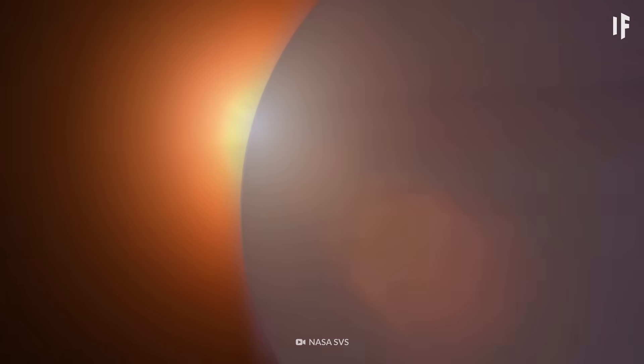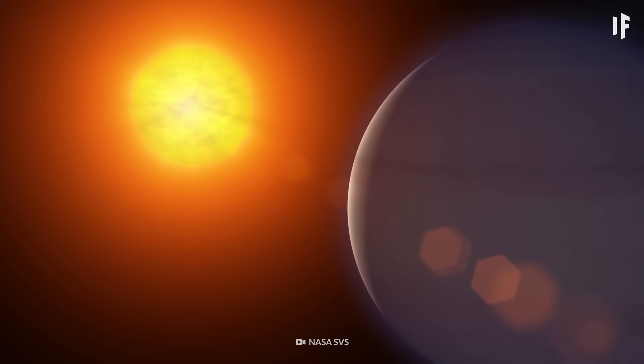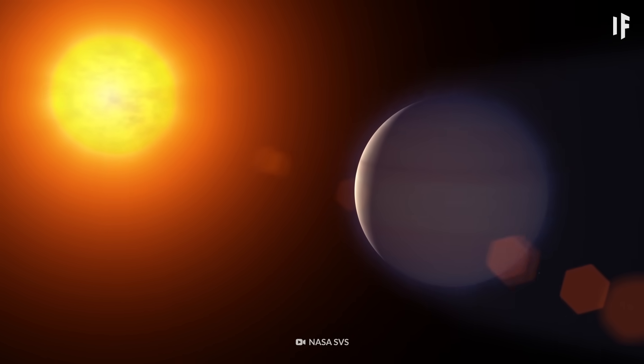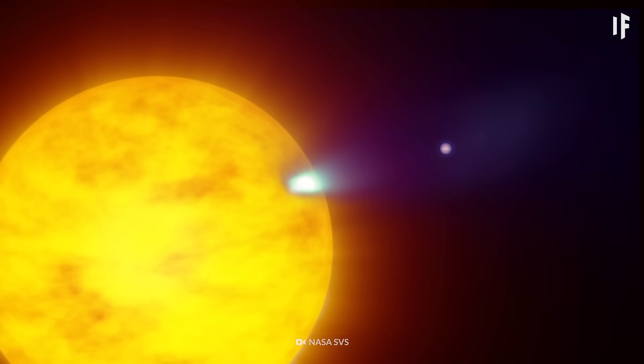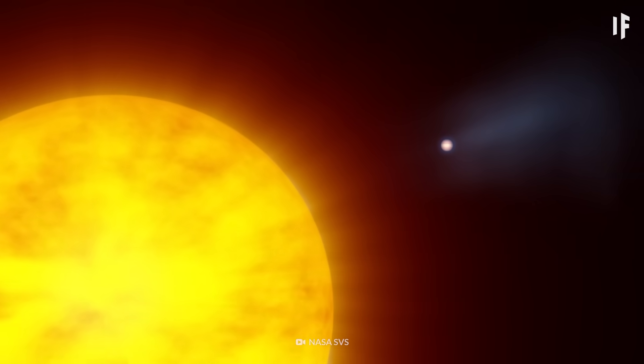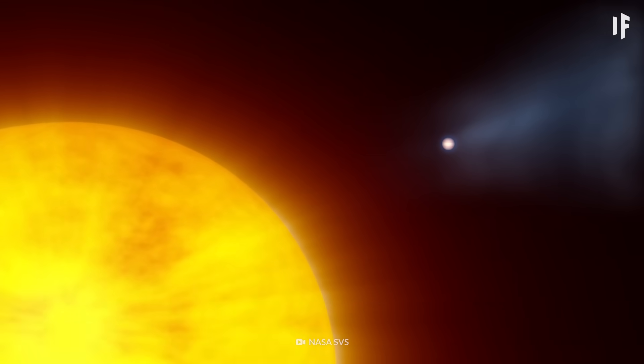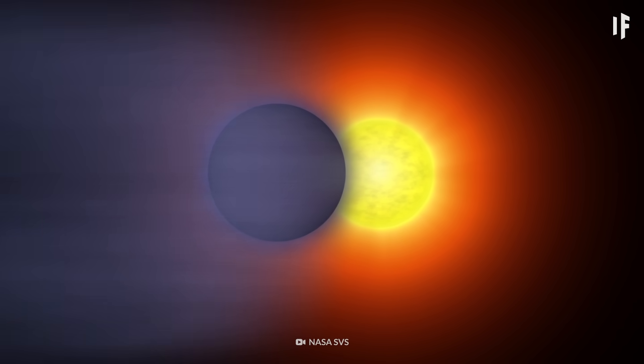This planet is located so close to its star that it completes its orbit in just over two days. HD 189733 b is 13 times closer to its Sun than Mercury is to our Sun.